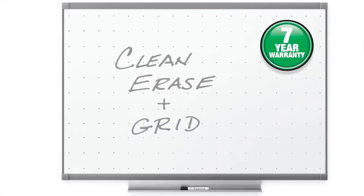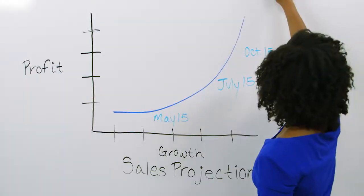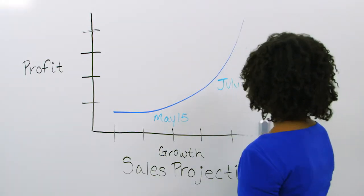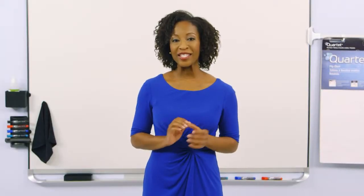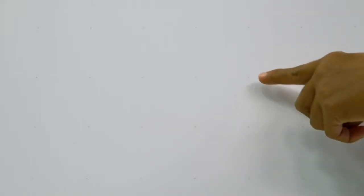Quartet's total erase boards offer the erasability of higher priced commercial boards at a more affordable price and come with a seven year warranty. A total erase coating and subtle grid pattern is applied to a melamine surface making this board resistant to staining, ghosting and denting.